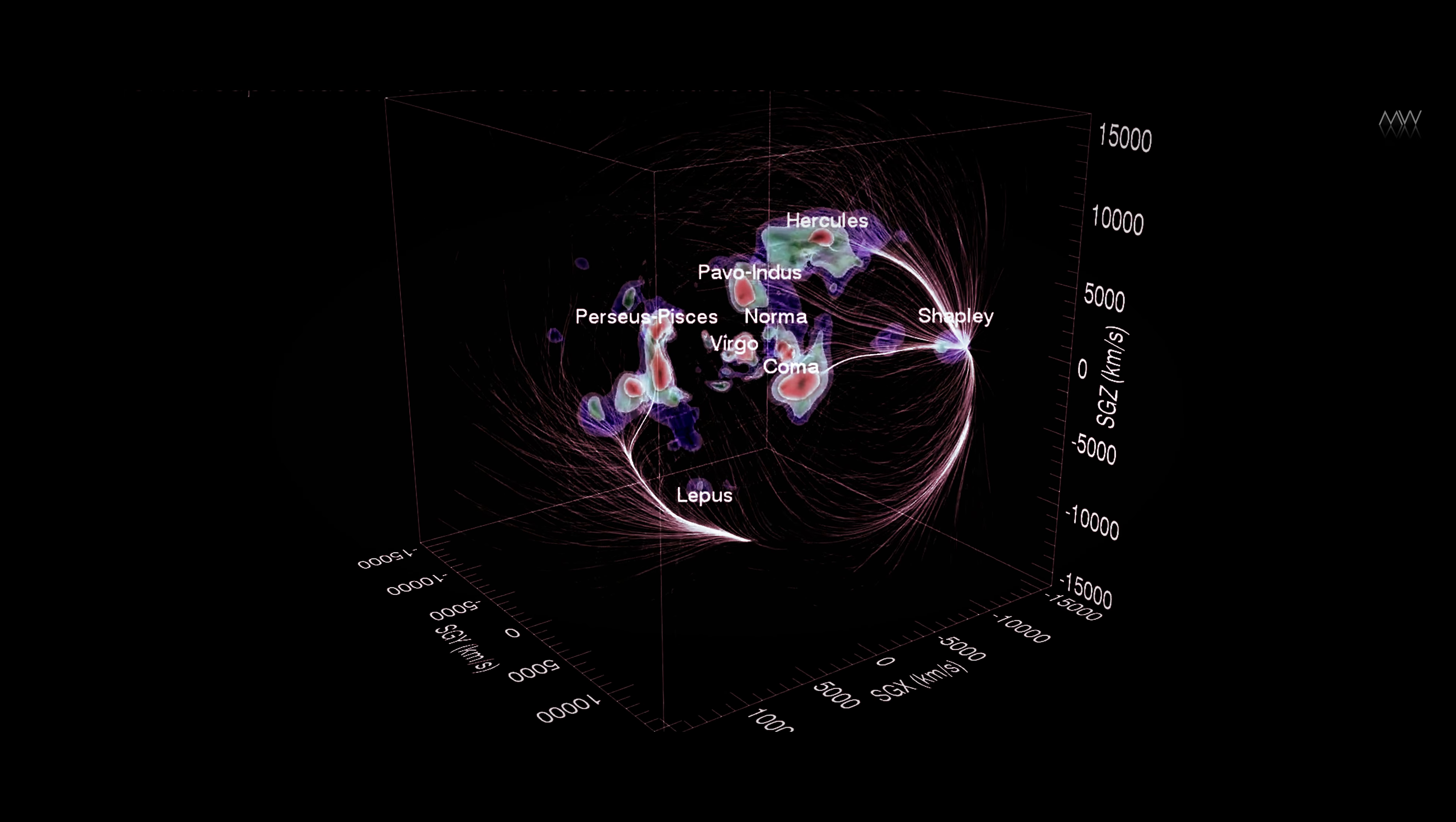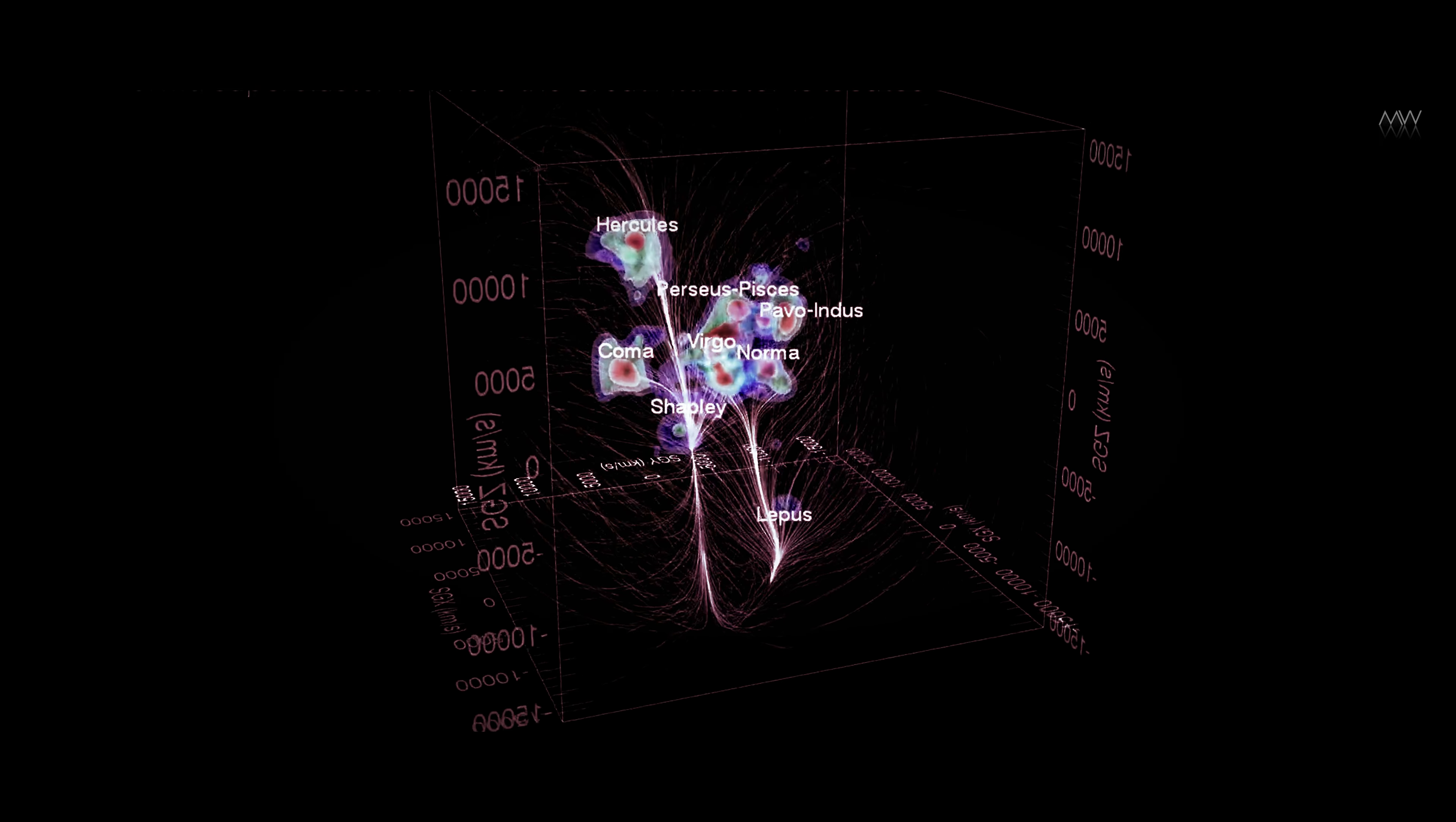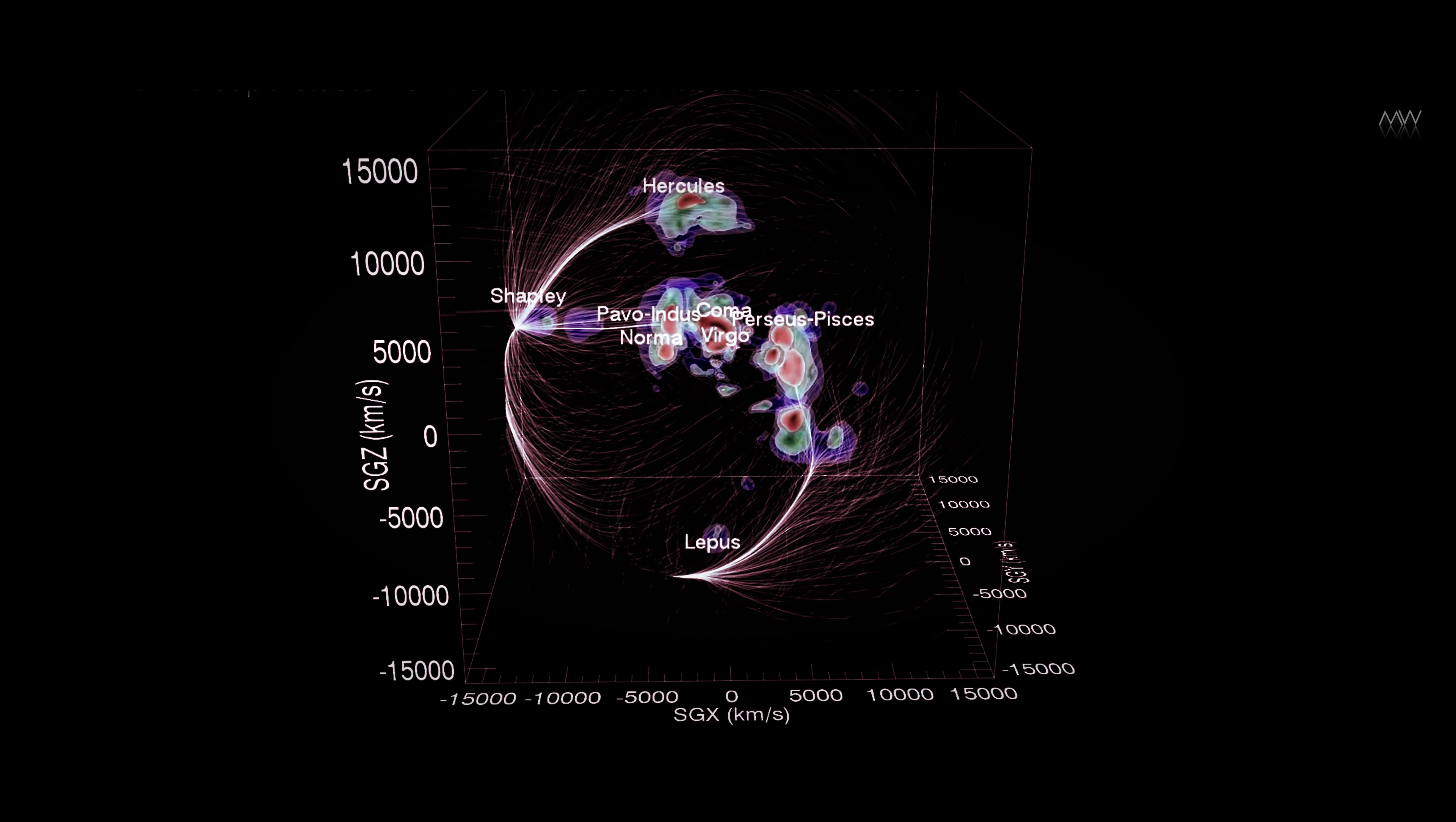While we are drawn towards the Great Attractor, there appears to be something even more massive situated behind it. Situated 650 million light-years away, known as the Shapley Attractor, or Shapley Supercluster.